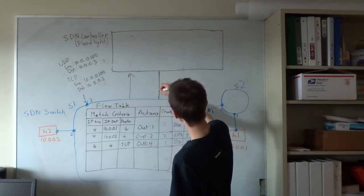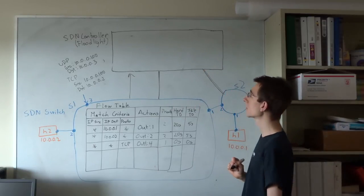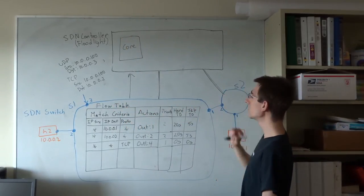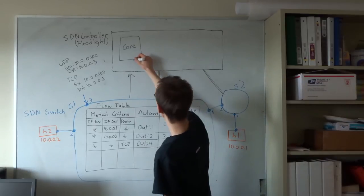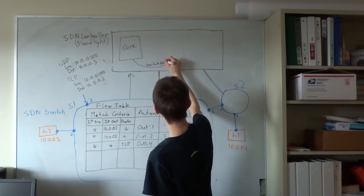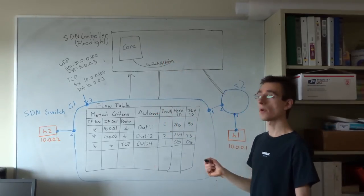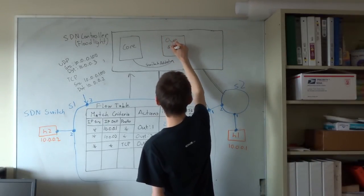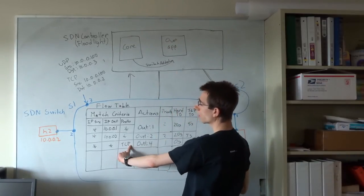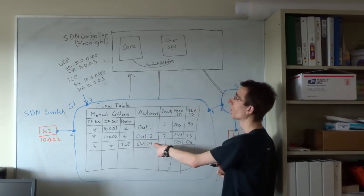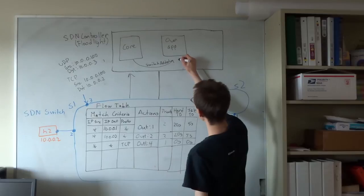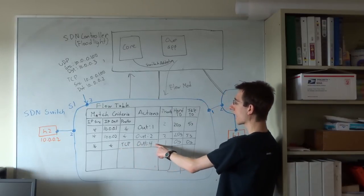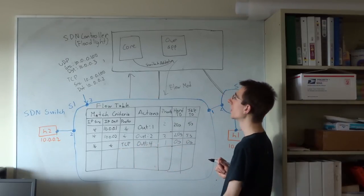Let's talk about how the controller is involved in controlling these SDN switches. The controller has a control channel that's a TCP connection with each of the particular switches. The core module in Floodlight watches for these new TCP connections, and whenever a new TCP connection is established for a new switch, it raises a switch added event. Applications can subscribe to certain events and react appropriately. When an application receives the switch added event, it can send a flow mod to the switch to install a particular entry with match criteria, action, priority, and timeout into the flow table in that particular switch.